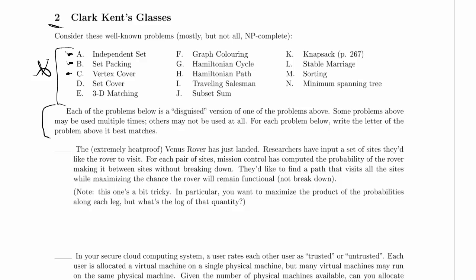In vertex cover, you're given a graph and a threshold value k, and you want to know: can you choose at most k nodes — notice this is an at-most problem — such that every edge in the graph has at least one of those nodes incident on it? So you've chosen at least one of the nodes on either end of every edge.